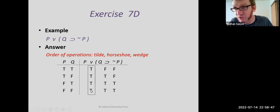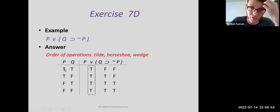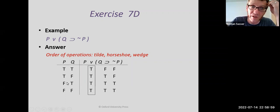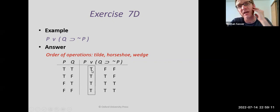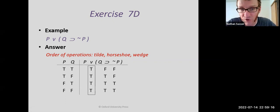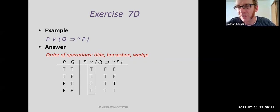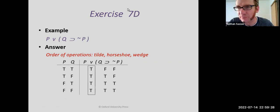A wedge is true if at least one disjunct is true. Line one: P is true, so it's true. Line two: P is true, so the wedge is true. Line three: P is false, but the other disjunct under the horseshoe is true — so still true. Line four: same case. So it's always true — this compound statement is true under all circumstances. I know I went fast on those. You're going to have to work through some examples to get this basic pattern in your head, but there's a start for you.